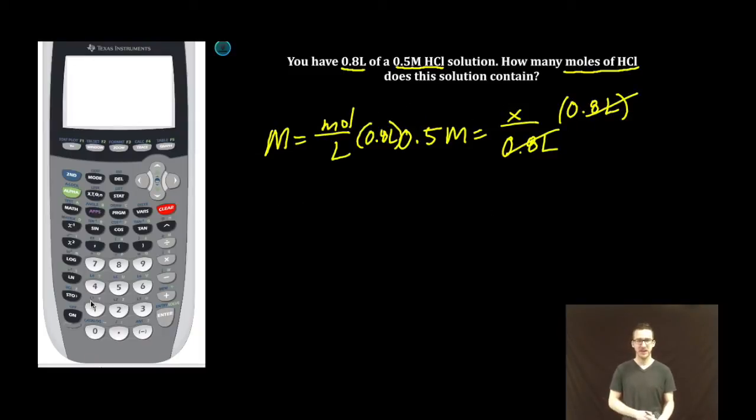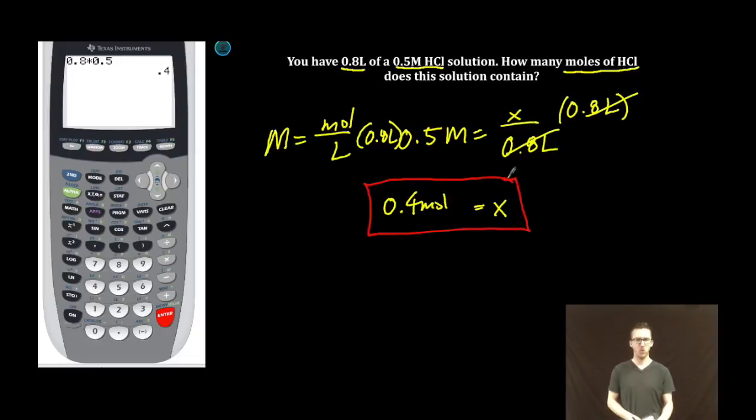I'm going to take a quick jump to my calculator. 0.8 times 0.5. Our number of moles are 0.4 in this solution. Boom, we are done.